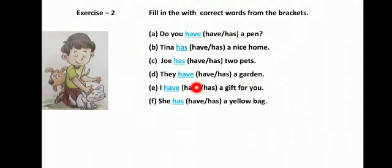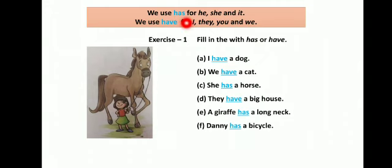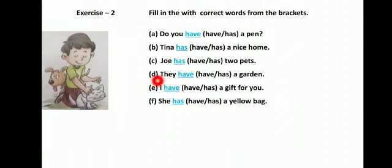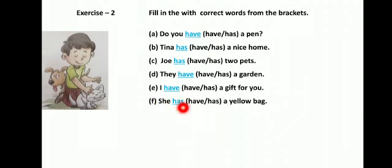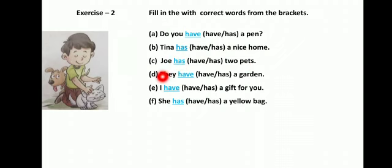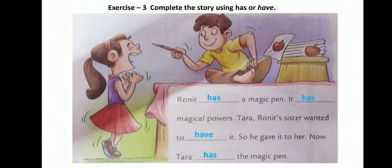Next — I dash a gift for you. I के साथ have use होगा। I have a gift for you. Next — she dash a yellow bag. She के साथ has use होगा। She has a yellow bag. Exercise 2 answers: do you have a pen, Tina has a nice home, Joe has two pets, they have a garden, I have a gift for you, she has a yellow bag.